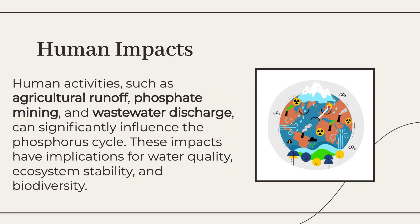Human Impacts. Human activities, such as agricultural runoff, phosphate mining, and wastewater discharge, can significantly influence the phosphorus cycle. These impacts have implications for water quality, ecosystem stability, and biodiversity.